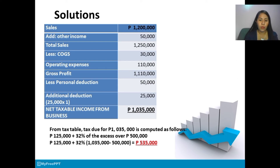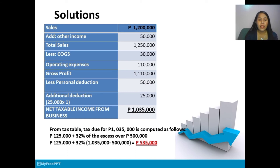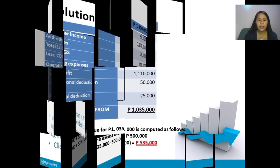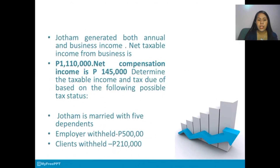Less operating expenses 110,000, so our gross profit is 1,110,000. Less personal deduction of 50,000 and additional deduction of 25,000, so the net taxable income from business is 1,035,000. From the tax table, tax due for 1,035,000 is computed as: 125,000 plus 32% of (1,035,000 minus 500,000), so the result is 535,000.